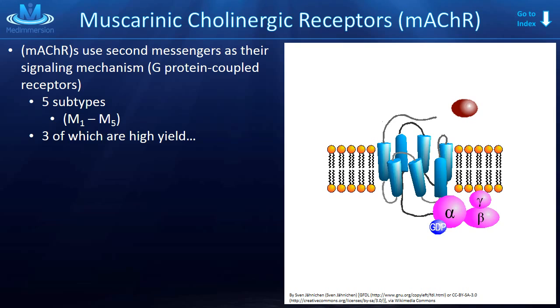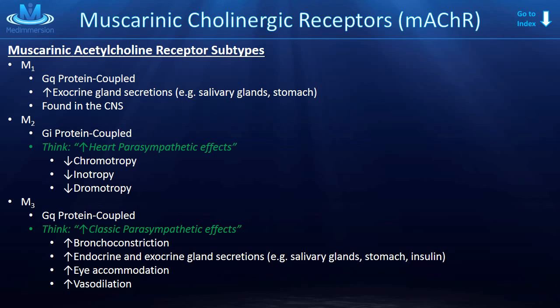Just as there were two subtypes of nicotinic cholinergic receptors, there are subtypes for muscarinic ones as well — actually five subtypes, but only three are high-yield. M1, M2, and M3 are the high-yield muscarinic receptors. M1 is a GQ protein-coupled receptor. It increases exocrine gland secretions, such as increasing saliva production and stomach acid. M1 receptors are also found in the central nervous system, where they are thought to play a role in memory formation.